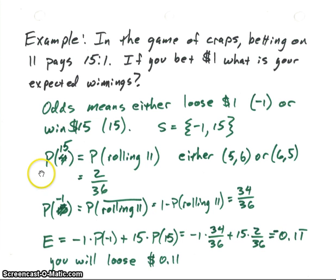So what's the probability of getting $15? It's the probability of rolling an 11. Now rolling an 11 means that we either have a 5 and a 6 on our roll, or we have a 6 and a 5 on our roll. So the probability of that occurring is just 2 over 36.